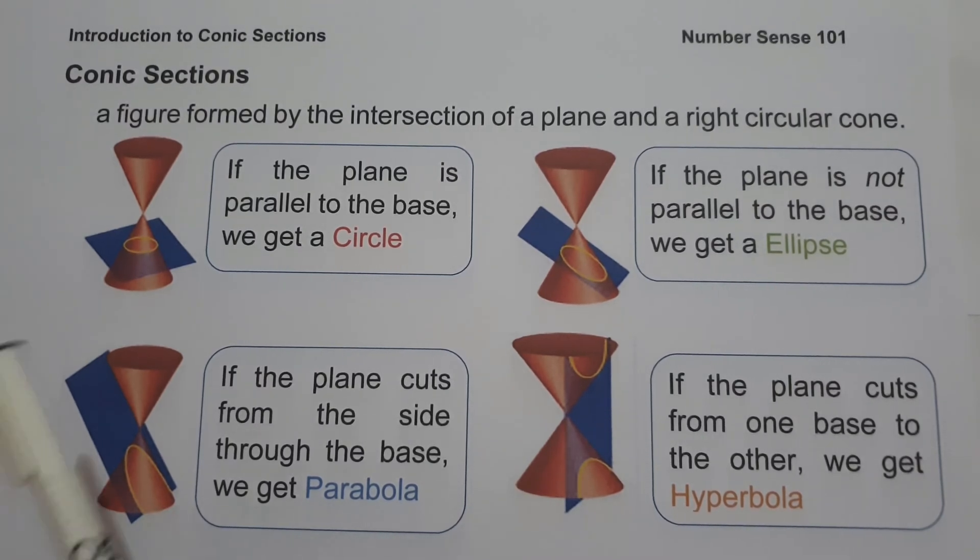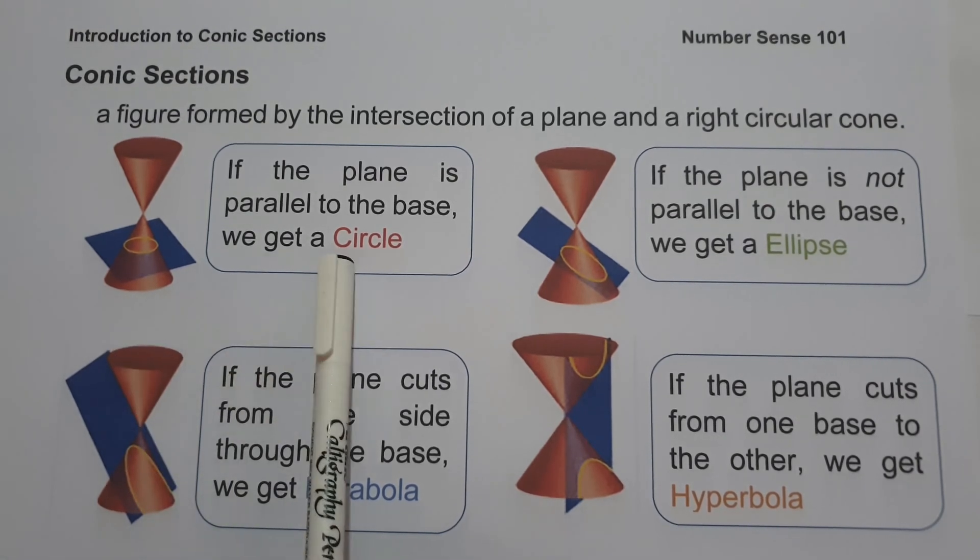First, if the plane goes from one side of the cone to the other and is parallel to the base, we get a circle. A circle is the locus of all points in the plane having the same positive distance called the radius from a fixed point called the center.